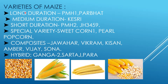Varieties of maize include long duration varieties PMH1 and Prabhat, medium duration variety Keshari, and short duration varieties PMH2 and JH3459. Special varieties include Sweet Corn 1 and Parbhat Popcorn. Composite varieties are Johar, Vikram, Kishan, Ambar, Vijay, and Sona. Hybrid varieties include Ganga 2, Sartaj, and Para.